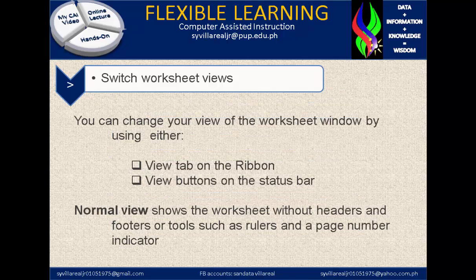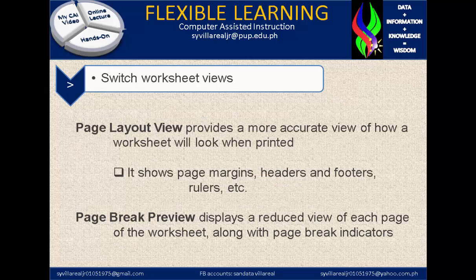Under this, you can change your view of the worksheet window by using either the View tab on the ribbon, or the View button on the status bar. We have the Normal View, which shows the worksheet without headers and footers or tools such as rulers and a page number indicator. We also have the Page Layout View that provides a more accurate view of how a worksheet will look when printed.